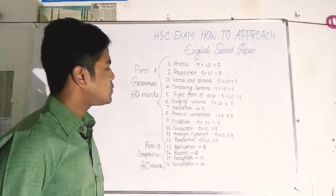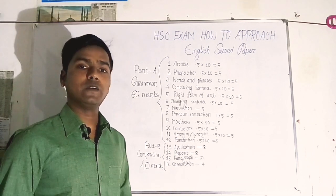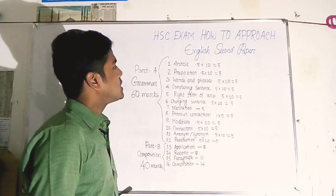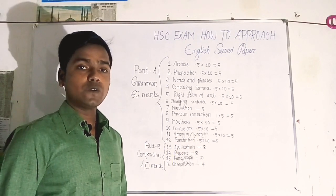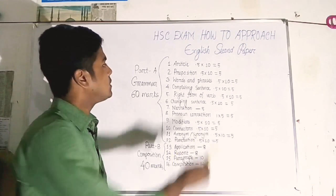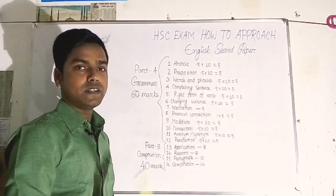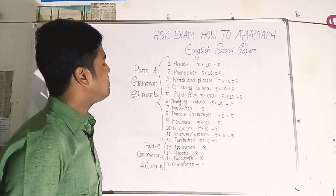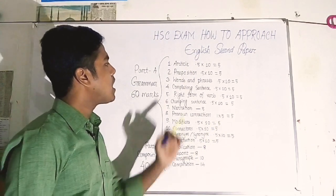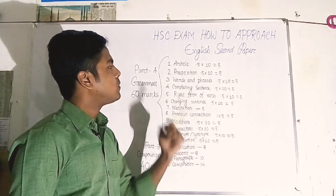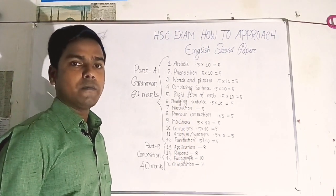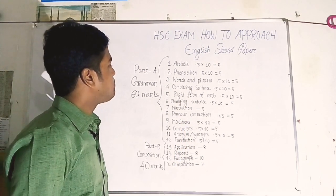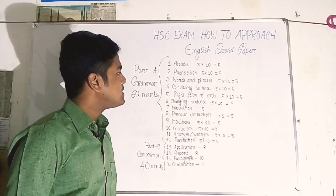Number 1 is Article. Each item carries 0.5 marks. There are 10 articles, so when A and The appear, you need to answer carefully. Total mark is 5. Number 2 is Preposition — same as Article, it is straightforward to answer. Total mark is 5.